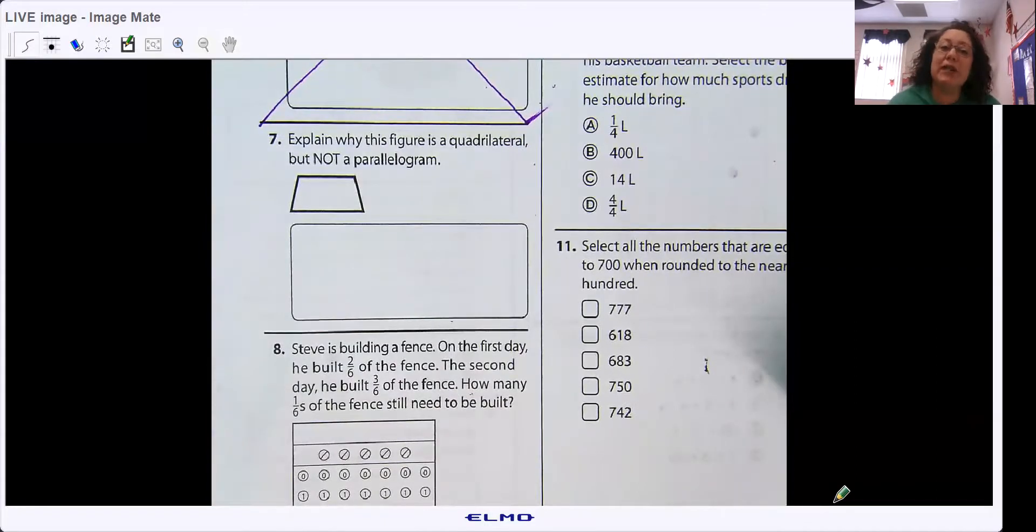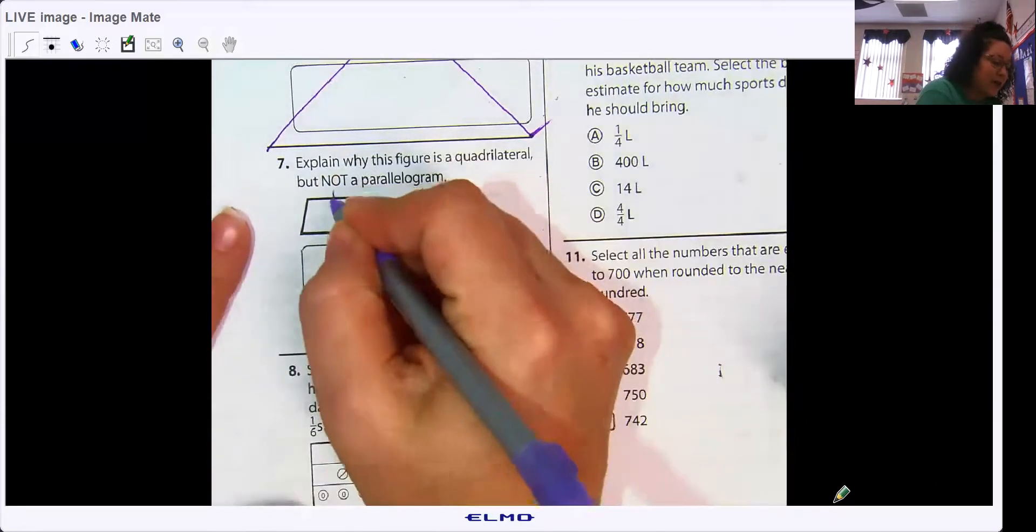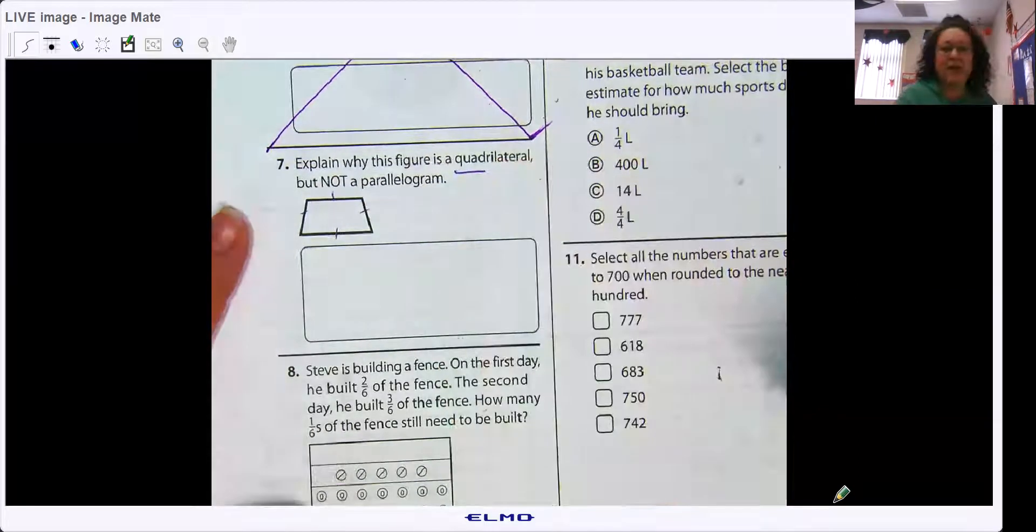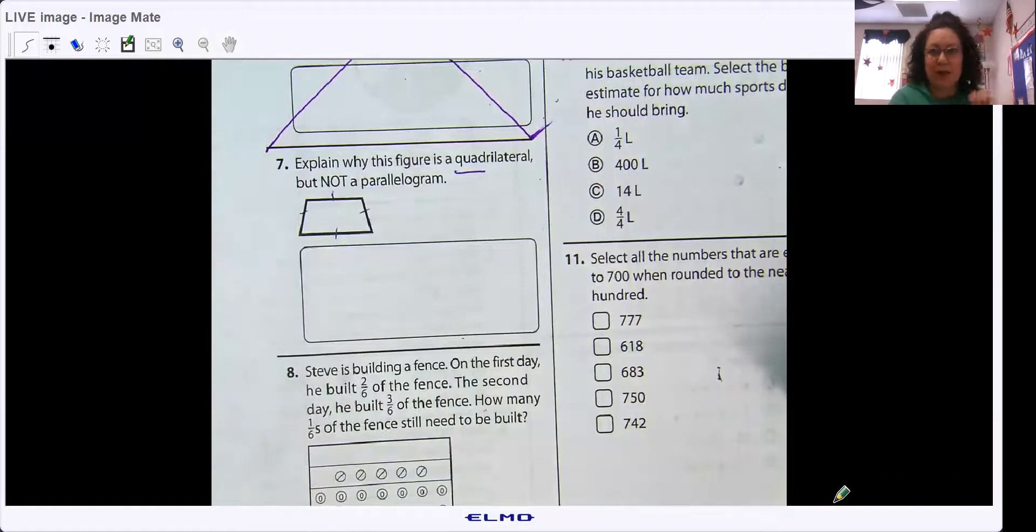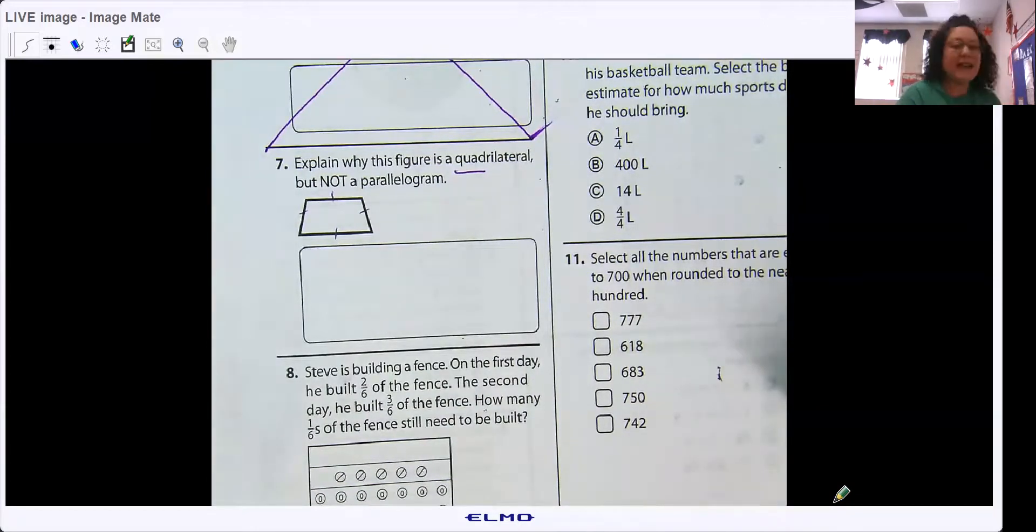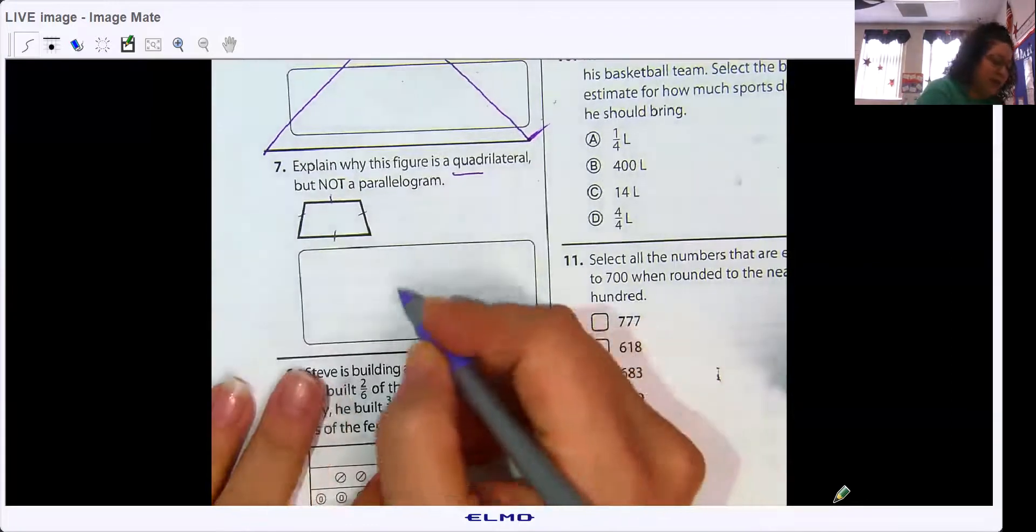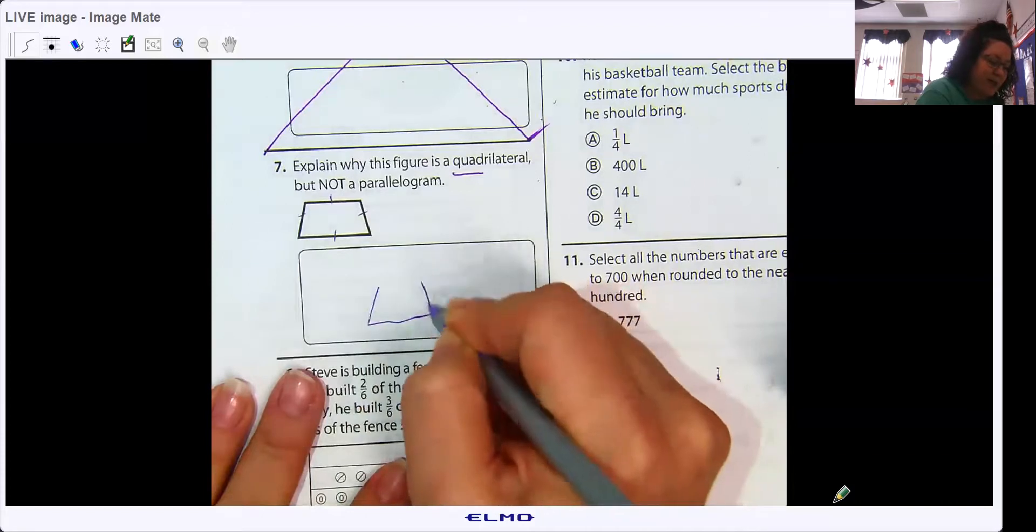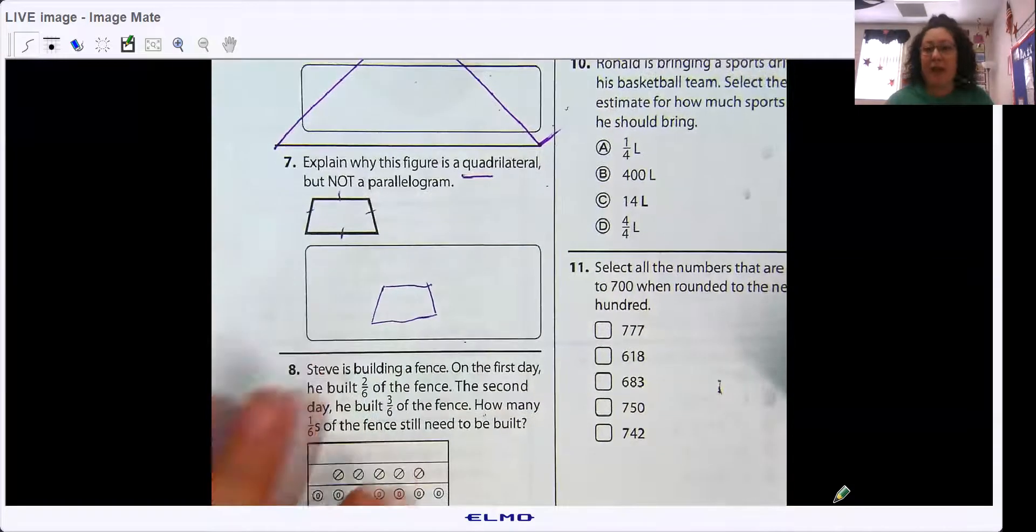Explain why this figure is a quadrilateral but not a parallelogram. We did geometry a while ago, so this is good practice. It is a quadrilateral because it has four sides. Remember that prefix means four, like four quarters in a dollar. It's not a parallelogram. Do you remember what a parallelogram is? All sides must be parallel. Do you remember parallel?